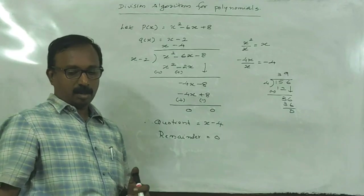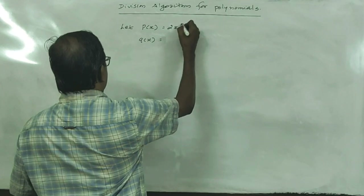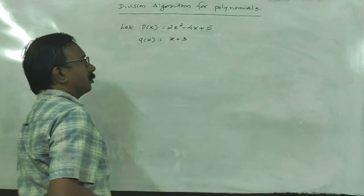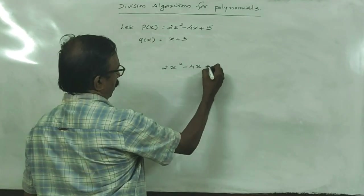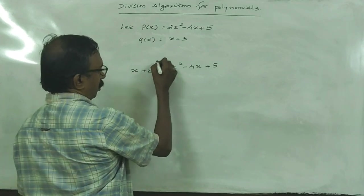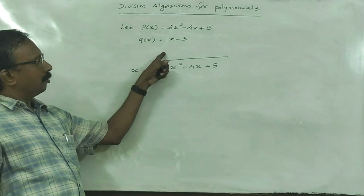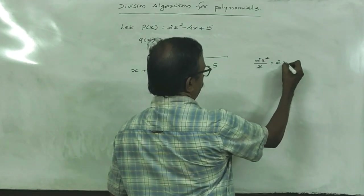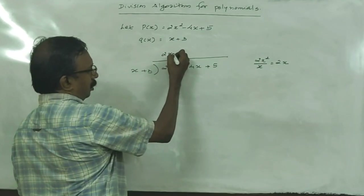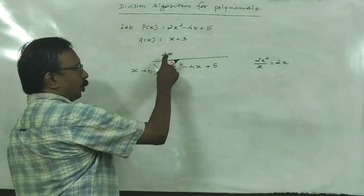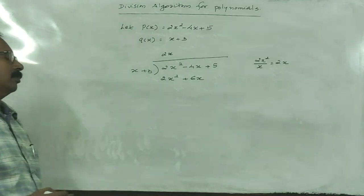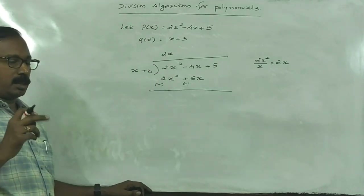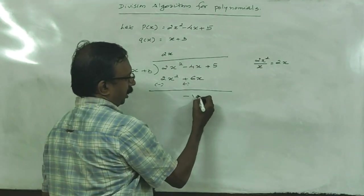Now let me take another example: 2x² - 4x + 5 divided by x + 3. Find the first term of the quotient polynomial. 2x² divided by x gives 2x. Now 2x times x is 2x², and 2x times 3 is 6x. Changing the signs and adding: 2x² - 2x² = 0, -4x - 6x = -10x, plus 5.